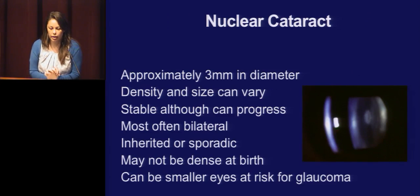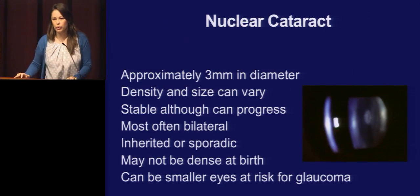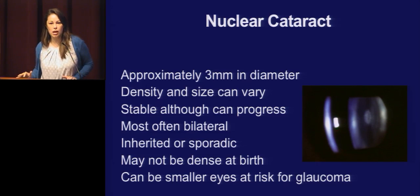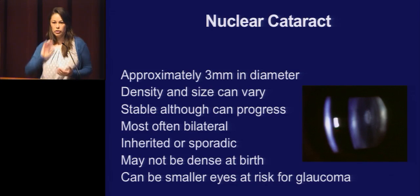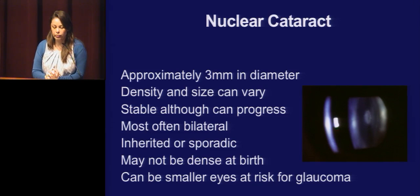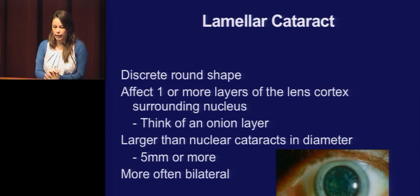Nuclear cataracts can occur in kids as well. They're usually about three millimeters or a little smaller, and the density and size can vary. These can progress, so you want to follow these kids and do your red reflex test. I recently had a child with a unilateral nuclear cataract with a great view to the back — it was really faint, so we're just watching it. These patients can have smaller eyes, and smaller eyes put you at risk for glaucoma.